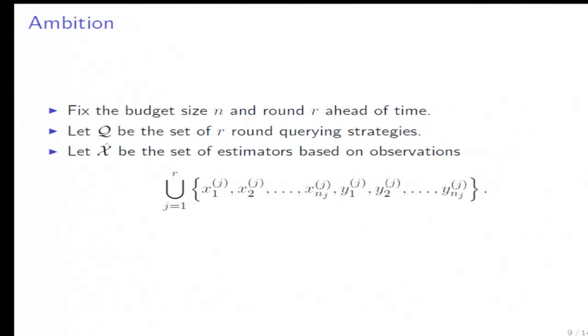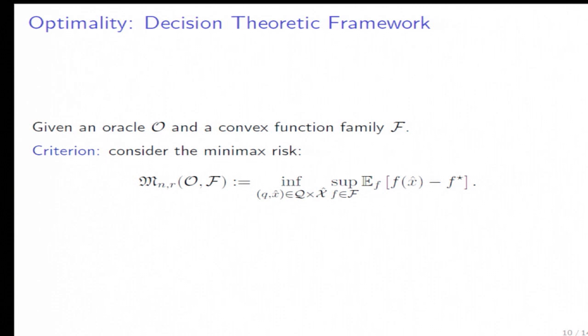After finishing the motivation and problem introduction, now we talk about the academic goals. Let's fix n, the budget size, and the number of rounds r ahead of time. We denote Q to be all possible query strategies and x hat to be all possible estimators based on our observations. The goal is to understand the optimal strategy. To define optimality, we adopt the decision-theoretic framework common in statistics. Given some oracle (first-order or zero-order) and a convex function family F, we consider the minimax risk common in statistical decision theory. We want to evaluate the minimax risk to identify the optimal strategy.